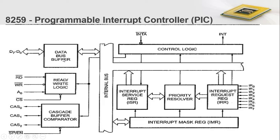This data bus buffer unit indicates the data transfer between the processor and this 8259. This unit supports transferring data byte by byte between the processor and the 8259 unit. The read/write logic indicates the direction of data transfer — from the processor to this 8259 — as well as command information. The CS bar pin indicates chip selection; it is an active low signal, so whenever its value becomes low, this read/write logic gets selected.